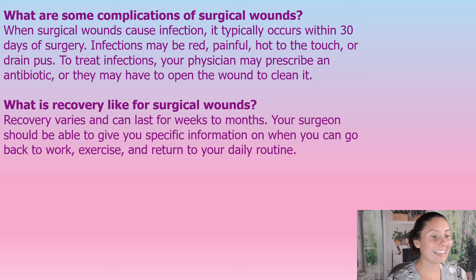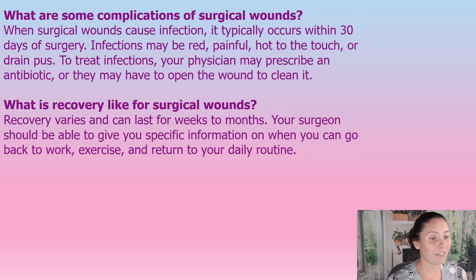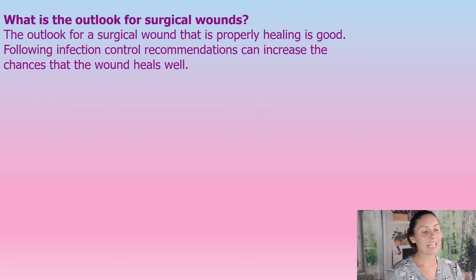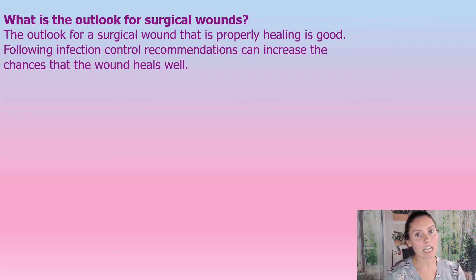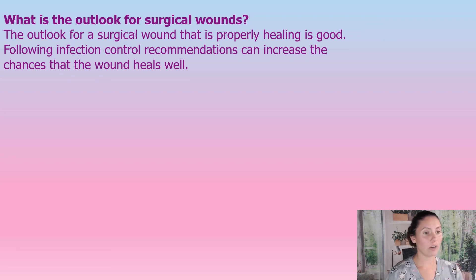Recovery from a surgical wound varies and can last from a few weeks up to months. Your surgeon should be able to give you specific information on when you can return to work, exercise, and your daily routine. Follow all infection control recommendations given to you, including how to change the dressing and any antibiotics or pain medication. Pain control is important because a wound actually can't heal properly if pain is not managed — so follow the directions outlined in your discharge paperwork and the wound should heal properly.